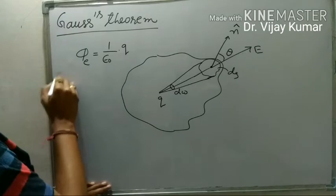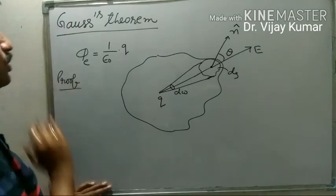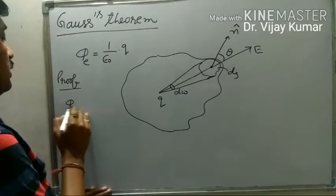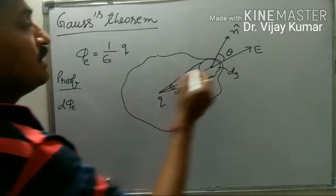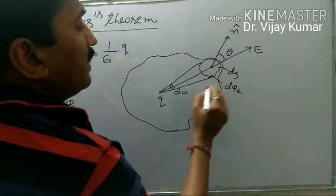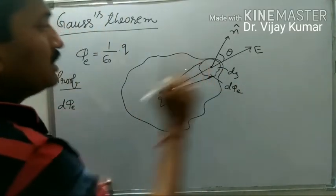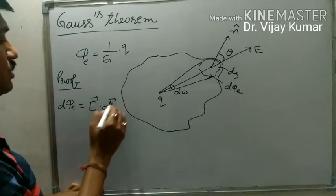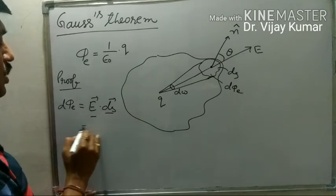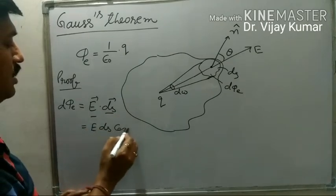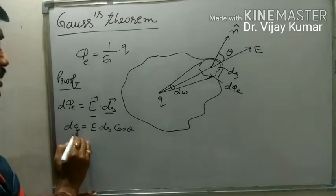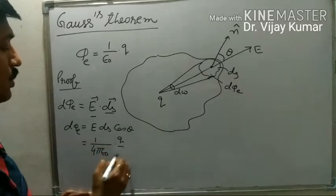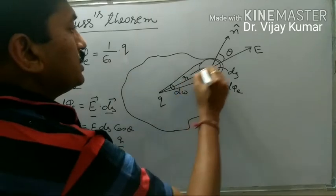Now we want to prove this Gauss theorem. We know that d phi e is the flux due to this small surface. d phi e, the flux passing through this small surface, should be equal to electric field dot ds — the dot product of the small surface and electric field — or we can write E ds cos theta. We know that electric field is 1 upon 4 pi epsilon naught times q upon r square, where r is the distance.